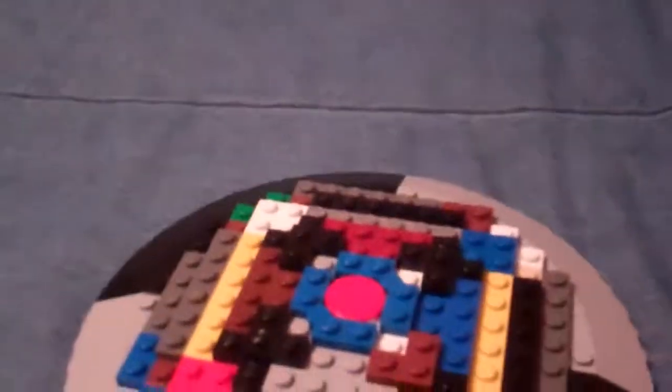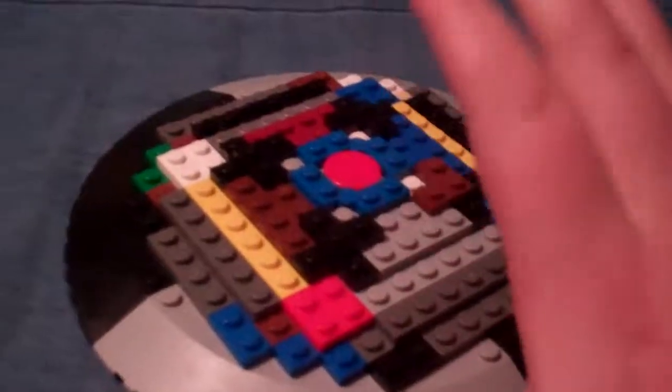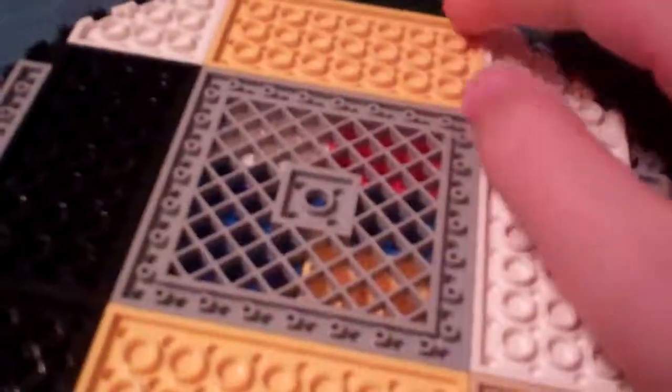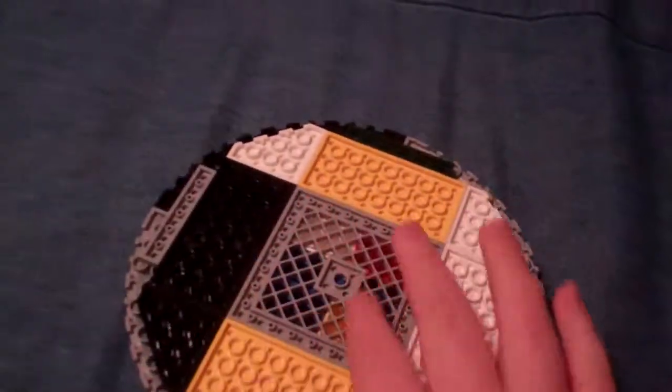It's just a circular disc, as you all can see, made out of these quarter circle pieces. It's got just a couple of base plates on the bottom, and this gridded plate.